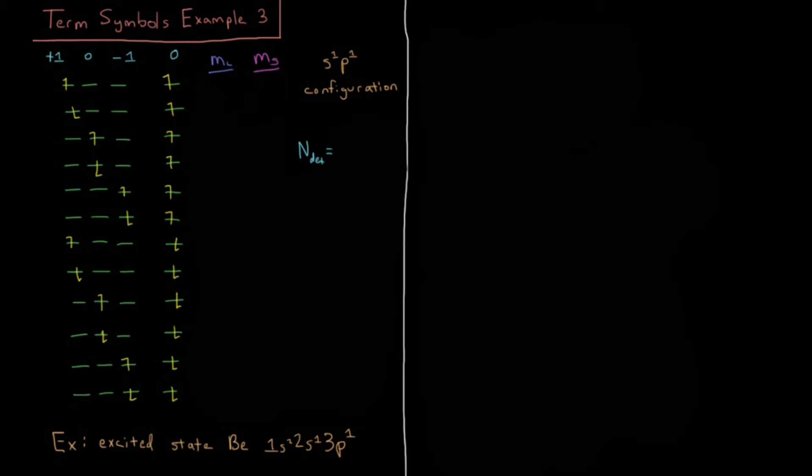In this video we're going to look at another term symbols example to see what happens when we have multiple partially filled subshells. This example is going to be the S1P1 configuration, something that you don't usually see in traditional Aufbau filling up of the atomic orbitals.